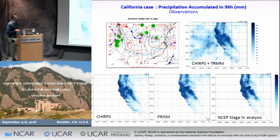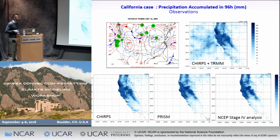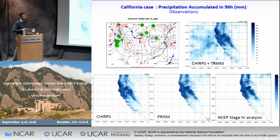For this event, we considered different observational datasets. Here I have reported the 96-hour accumulated precipitation from TRMM plus CHIRPS. TRMM is based on satellite measurements. CHIRPS is based on a mix between satellite imagery and in-situ measurements. PRISM is based on in-situ measurements, and NEXRAD Stage IV is an analysis which assimilates rain gauges and radar.